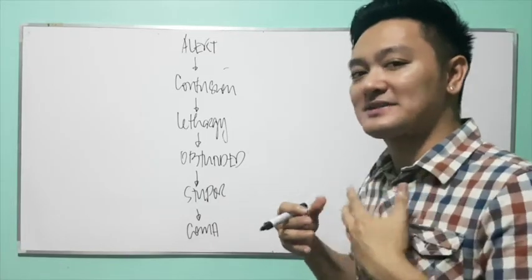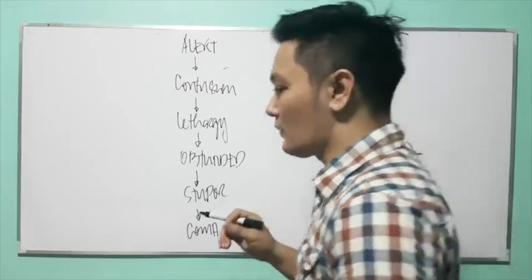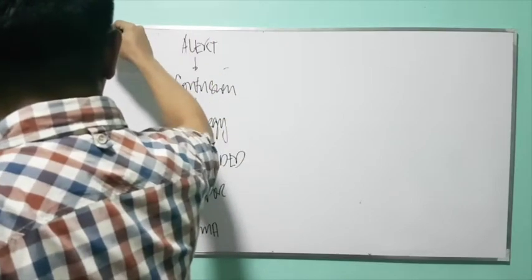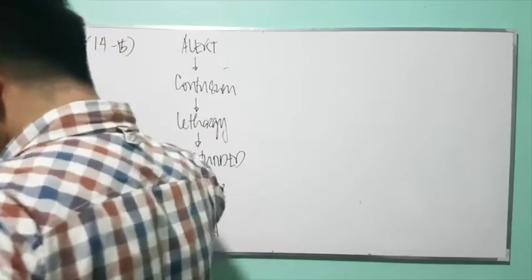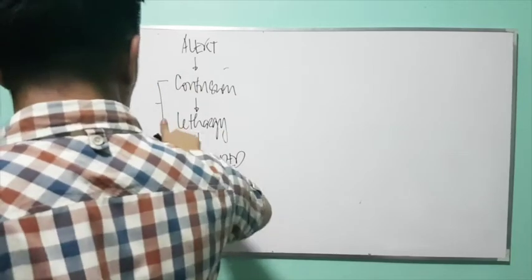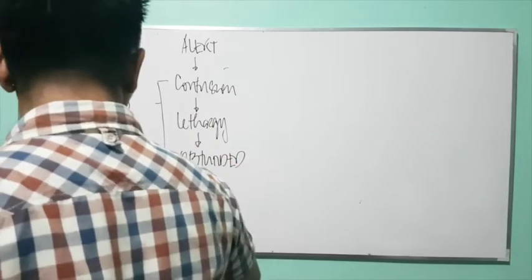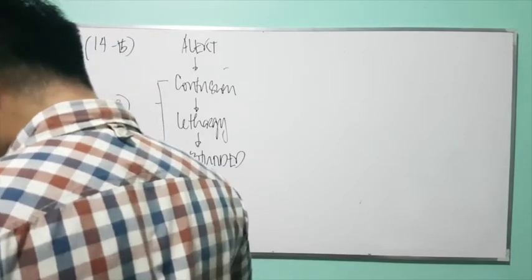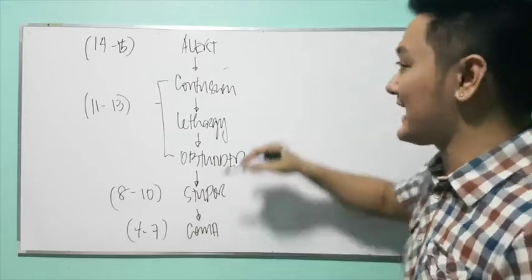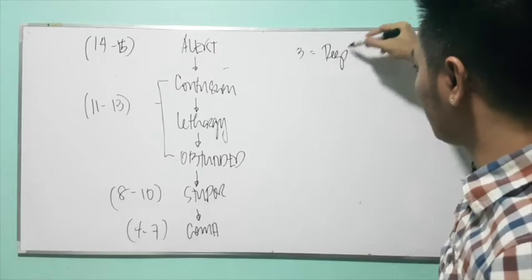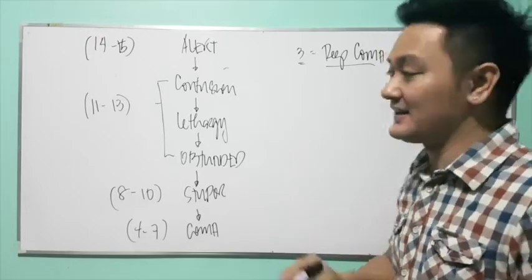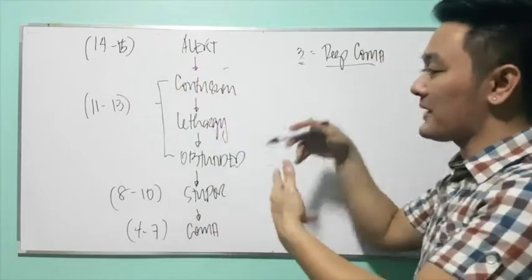Let's combine the Glasgow Coma Scale results with the transition in the level of consciousness. Write this down: if the patient is alert, the score is 14 to 15. Confusion and lethargy correspond to 11 to 13. If the patient is obtunded or stuporous, that is 8 to 10. Coma is 4 to 7. The lowest score you can give is 3, which represents deep coma — a very poor prognosis, or the patient may be deceased.